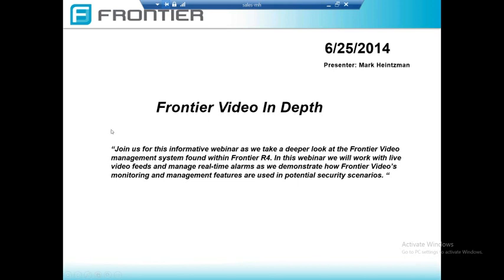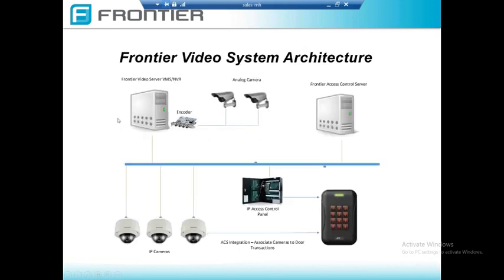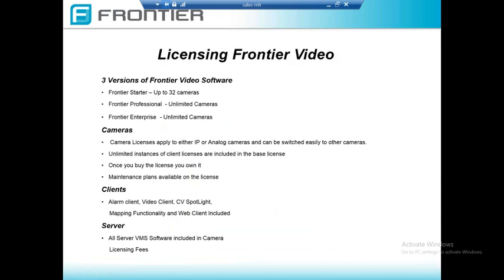First, I want to go over a couple of slides regarding licensing Frontier Video. There are three different versions of the software: Frontier Starter, Professional, and Enterprise. Frontier Starter is more of an entry-level software where you can only go up to 32 cameras if that's all you need.